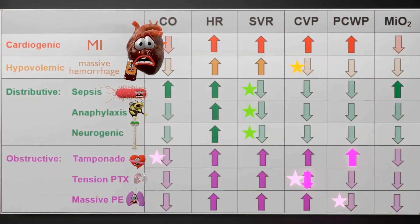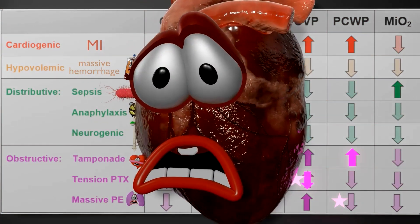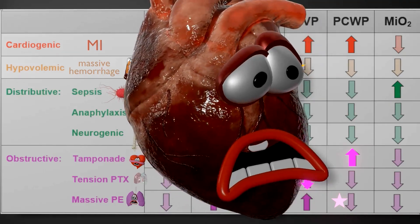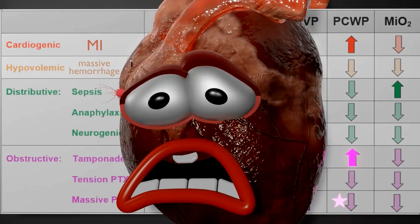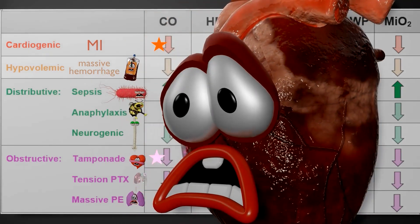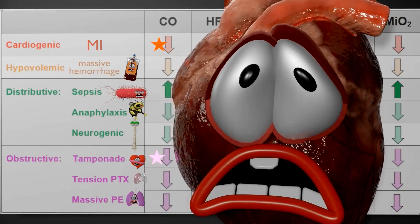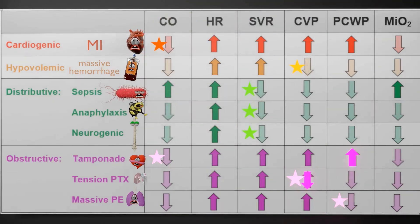So we have cardiogenic shock. In cardiogenic shock, there is some underlying pathology that damages the heart. Often it's an MI — a myocardial infarction — but it can also be due to a ruptured valve, cardiomyopathy, or some other heart pathology. For this video, let's stick to the most common cause: MI, myocardial infarction.